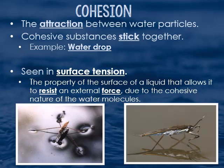Let's talk about cohesion. Cohesion is the attraction between two water molecules. Cohesive substances stick together, so you have water sticking to water — and that's how you get a water drop. This is seen with surface tension: the property of a liquid's surface that allows it to resist external force. If you look at the two images, you'll see a water strider, an organism that doesn't break the surface tension because of cohesion, and it looks like it can walk on water.